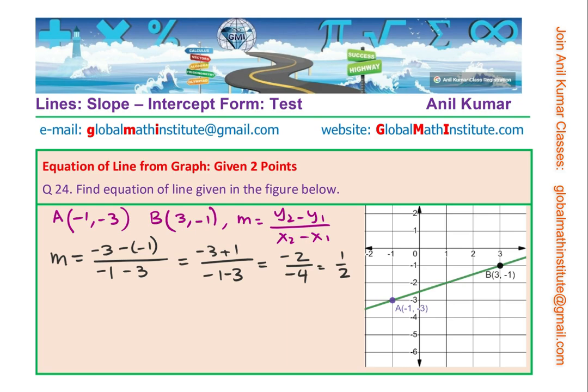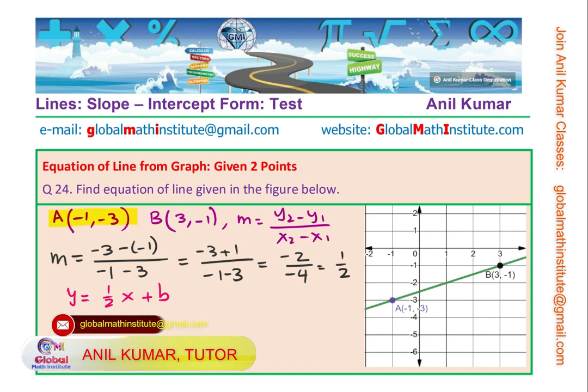Now we can find the y-intercept by using any one of these points. You know the equation now can be written as y equals to half x plus B. Substituting one of these points, let me select point A. In this case, minus 3 is the y value, minus 1 is the x value.